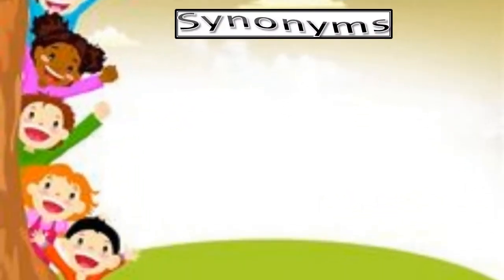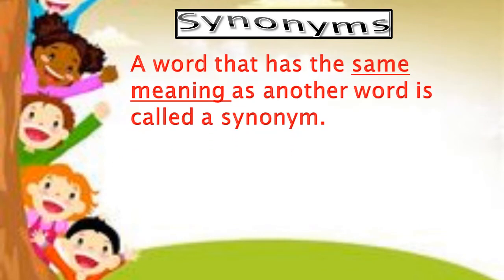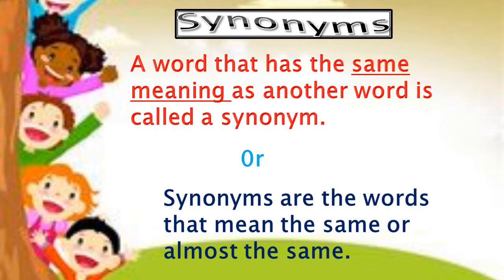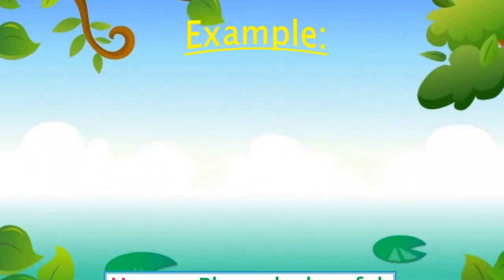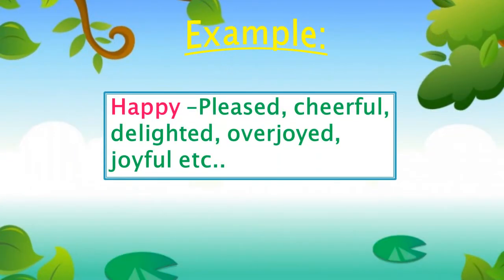Now we are going to learn about synonyms. A synonym is a word that has the same meaning as another word. Synonyms are words that mean the same or almost the same. For example, the synonyms of 'happy' are: pleased, cheerful, delighted, overjoyed, and joyful.